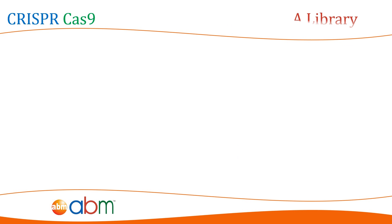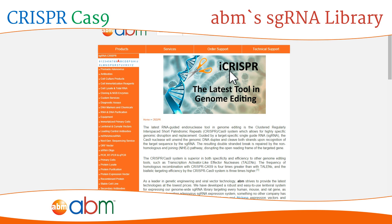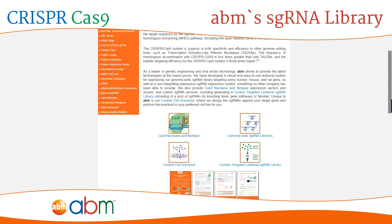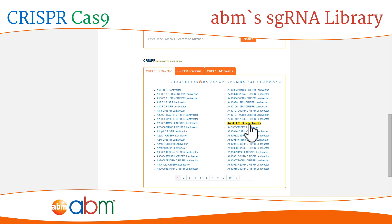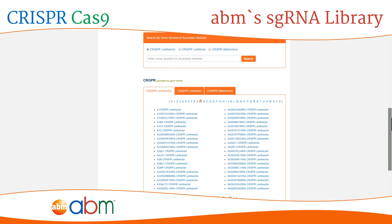To locate ABM's vast repertoire of sgRNA libraries, start by finding us at our homepage at www.abmgood.com. From there, start by clicking on CRISPR-Cas9. You will be taken to our CRISPR-Cas9 product page, which features everything required for carrying out successful genome modification through the CRISPR-Cas9 system. By clicking on genome-wide sgRNA libraries, or alternatively scrolling to the bottom of the page, you will find our sgRNA products sorted by gene names.